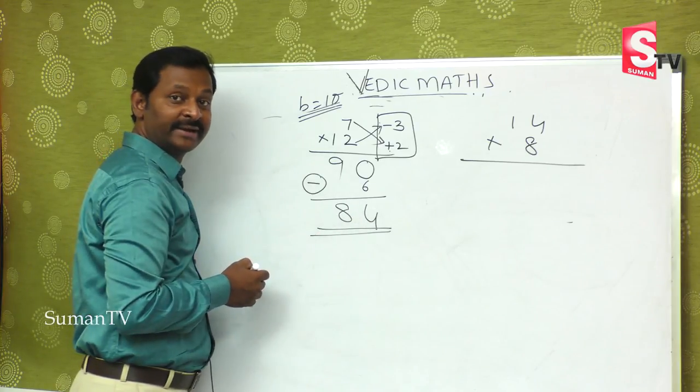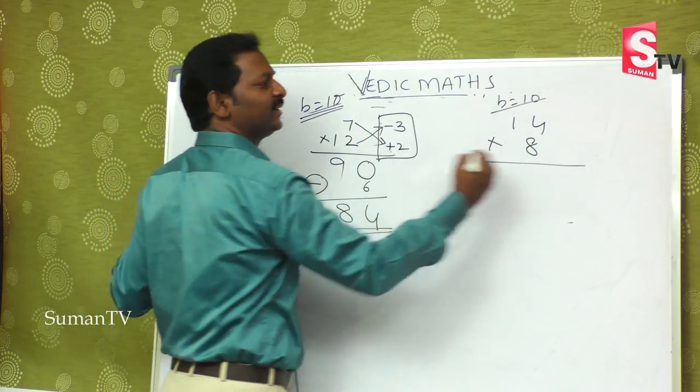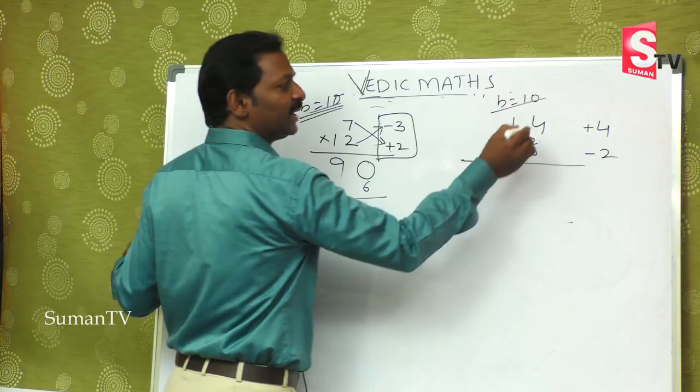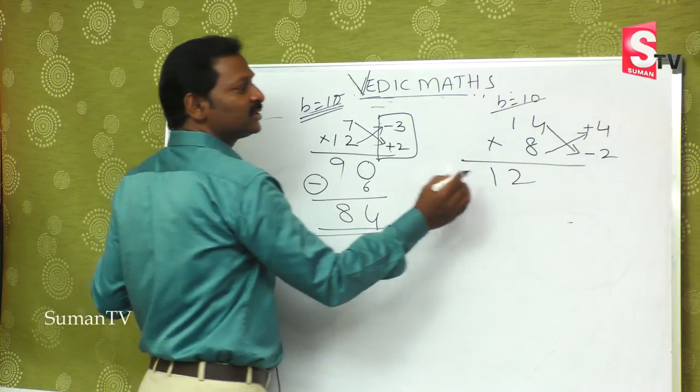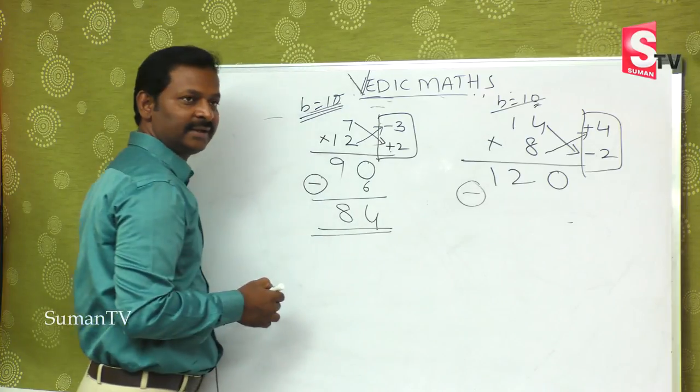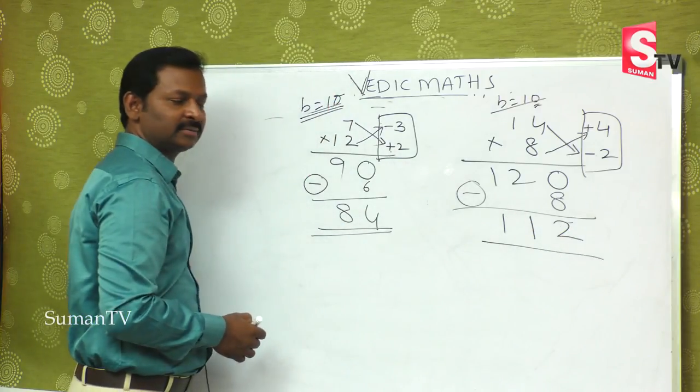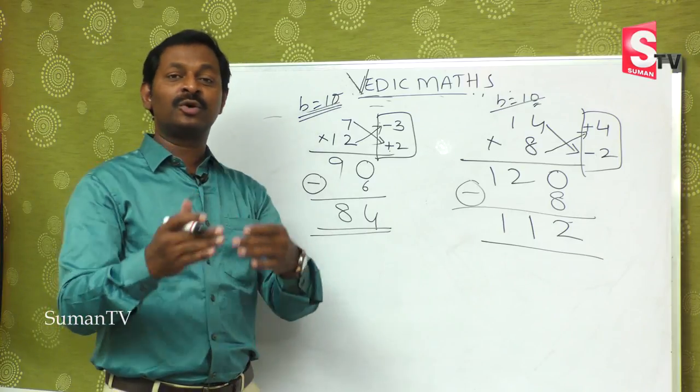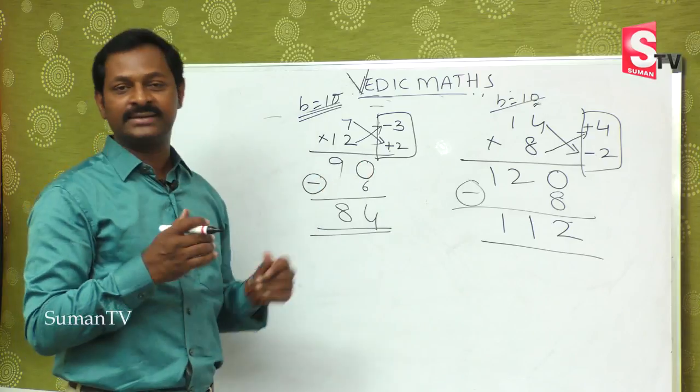Without carrying or borrowing. Next example: 14 into 8. The base number is 10. 14 is greater than 10 by 4, so plus 4. 8 is less than 10 by 2, so minus 2. Now 14 minus 2 equals 12, or 8 plus 4 equals 12. Base 10, we put one zero. Plus into minus gives minus, so 4 times 2 is 8. That gives us 112 according to the base complement method.